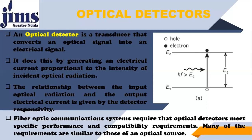This is the concept behind the working of an optical detector — how optical signal and optical power are converted into current. The optical detector generates an electrical current proportional to the intensity of incident optical radiation. Whatever output the optical detector has, the electrical current is proportional to the intensity of the incident optical radiation, and the variation of electric current depends upon the variation of the input intensity.